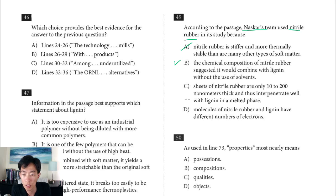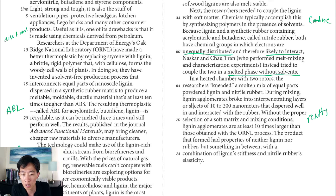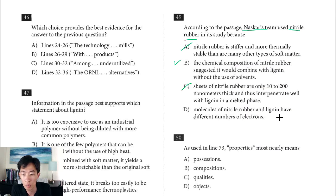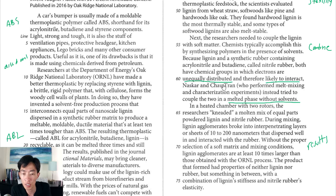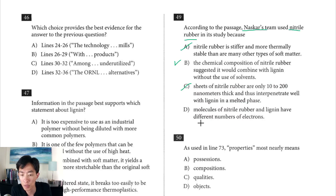Choice C, sheets of nitrile rubber are only 10 to 200 nanometers thick and thus interpenetrate well with lignin in a melted phase. When they mentioned that the sheets are only 10 to 200 nanometers thick, I don't think they said that about the nitrile rubber. I think they said that about the finished product, but we can double check. 66, during mixing, lignin agglomerates broke into interpenetrating layers or sheets of 10 to 200 nanometers that dispersed well within and interacted with the rubber. So clearly we're talking about the lignin, not the rubber. Choice C is going to be out. D, molecules of nitrile rubber and lignin have different numbers of electrons. That's probably true, but that's not the reason why they used it. Let's double check that line about electrons. It says both have chemical groups in which electrons are unequally distributed and therefore likely to interact. It's more about the distribution of the electrons and not the different number of electrons, although it might be true that they have a different number of electrons. D, still not as good a choice as B, and we'll stay with that one.